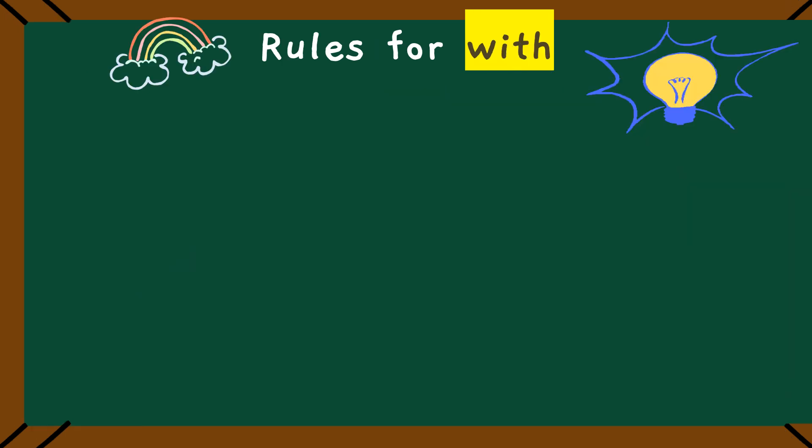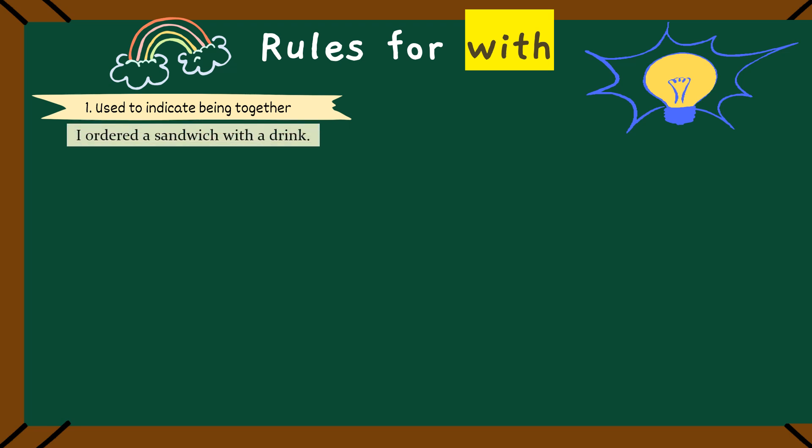Alright, our next preposition is with. We use with in lots of ways. But today, I will show you 5 super cool rules. So, let's get started. Rule number 1 is with can show that 2 things are together. For example, I ordered a sandwich with a drink. This means the sandwich and the drink come together. Imagine you are getting a sandwich and the drink together.